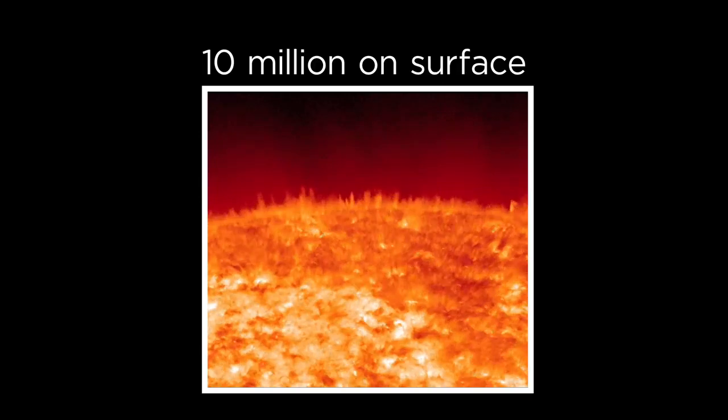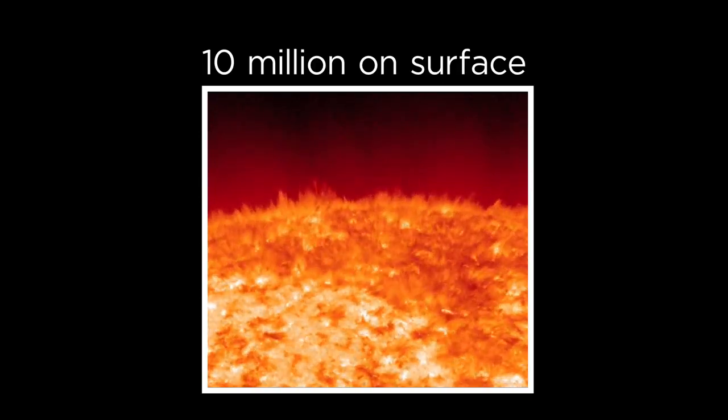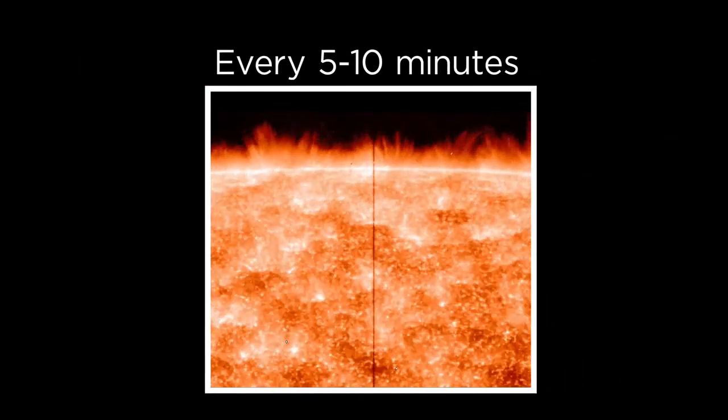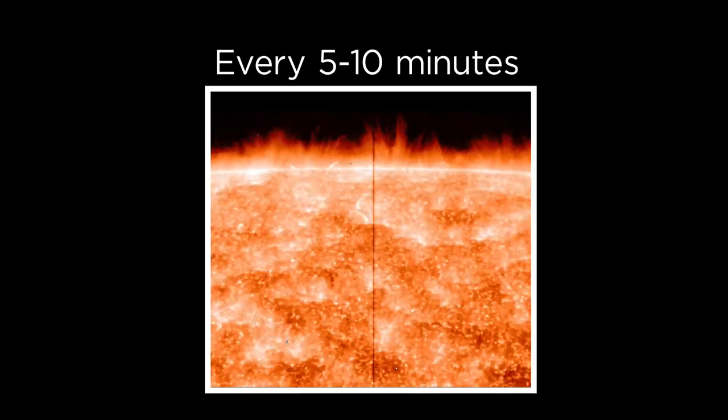There are roughly 10 million spicules on the surface at any given time. They can grow up to 6,000 miles long and jet off the sun at 60 miles per second. Each one appears and collapses over the course of 5 to 10 minutes.